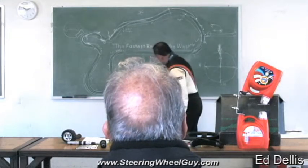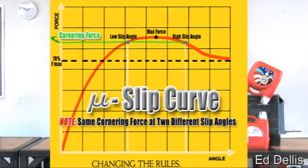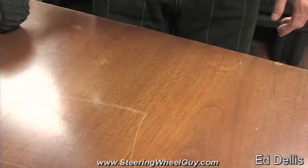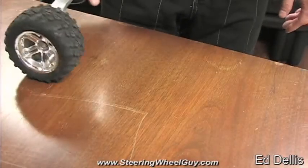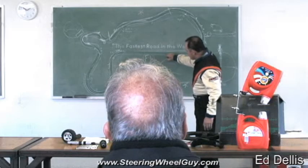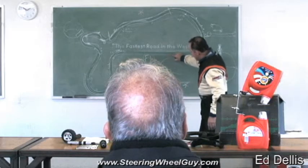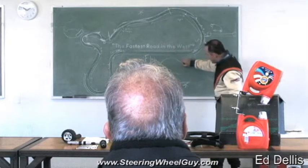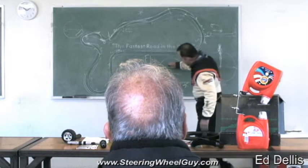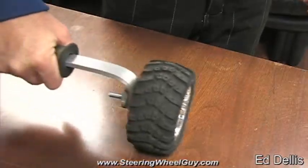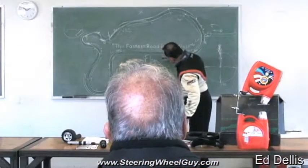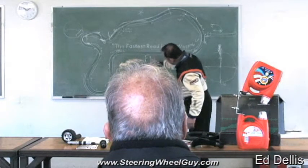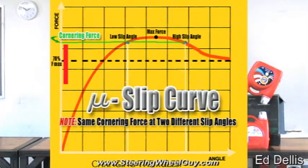That peak is where you want to operate. On a graph of slip angle versus cornering force, the force builds up and builds up, then starts to go away. That maximum value — if this peak is a ten, down here is about seven — you're operating at roughly seventy percent of peak.